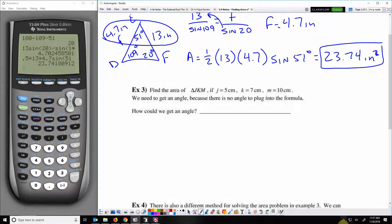Next we have a triangle JKM, on which we're going to be given side-side-side. Side J is 5 centimeters, side K is 7 centimeters, and side M is 10 centimeters. We do not have any angles. We can't use this half AB sine C because we don't have an angle. But if I want an angle, how could I get one? I could get one using the law of cosines.